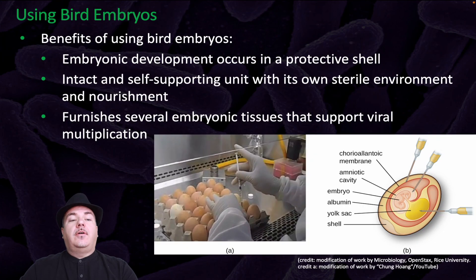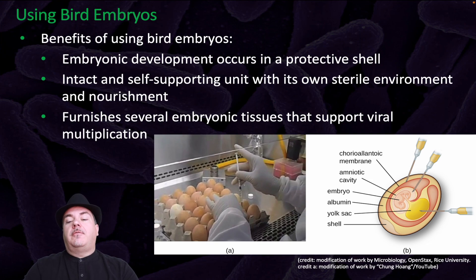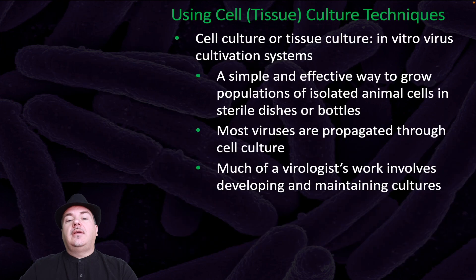Again, in vivo, we can use bird embryos. The benefits of using bird embryos is that embryonic development occurs in a protective shell — an intact and self-supporting unit with its own sterile environment and nourishment — and it furnishes several embryonic tissues that support viral multiplication.